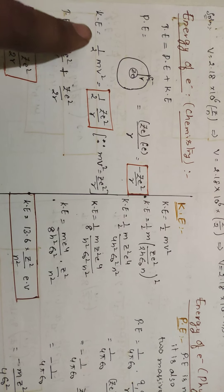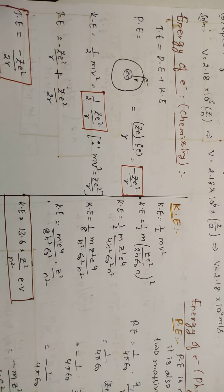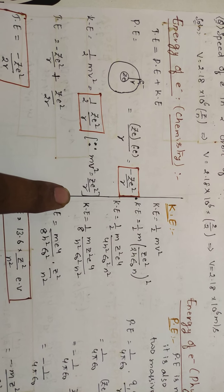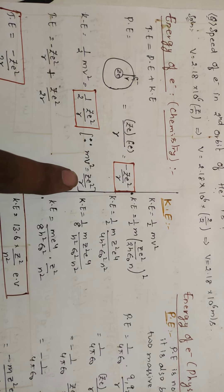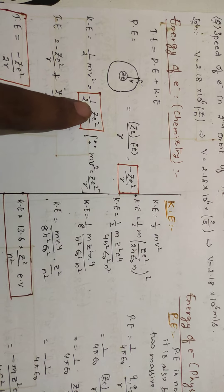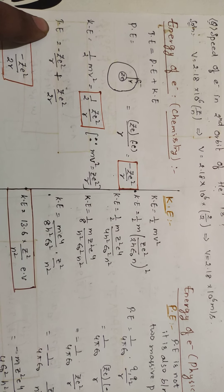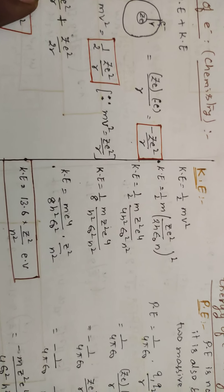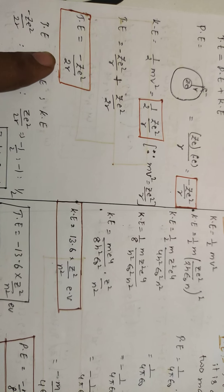Kinetic energy is represented as half mv². And while deriving the radius, we have come across that mv² is equal to ZE²/R. In the previous lecture I showed that mv² equals ZE²/R. So substituting, kinetic energy equals half times ZE²/R, that is ZE²/2R. So total energy equals potential energy plus kinetic energy: minus ZE²/R plus ZE²/2R gives total energy equal to minus ZE²/2R.